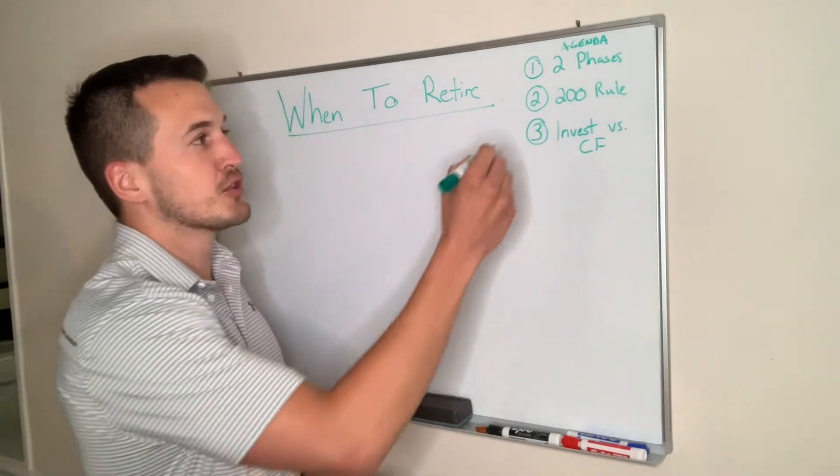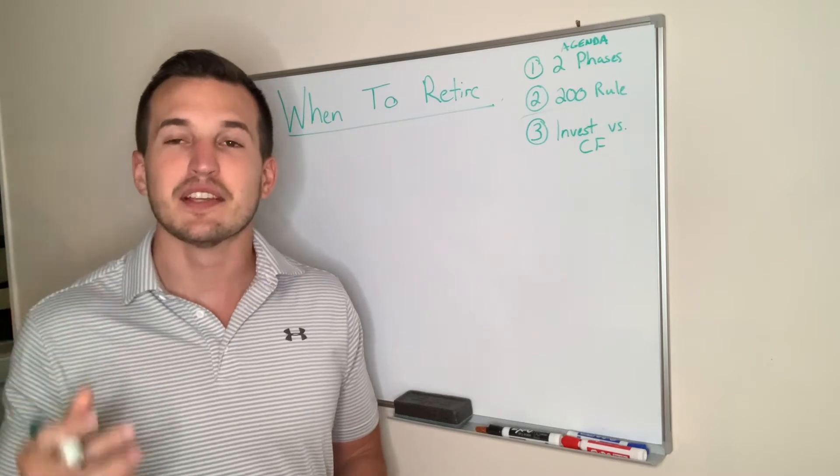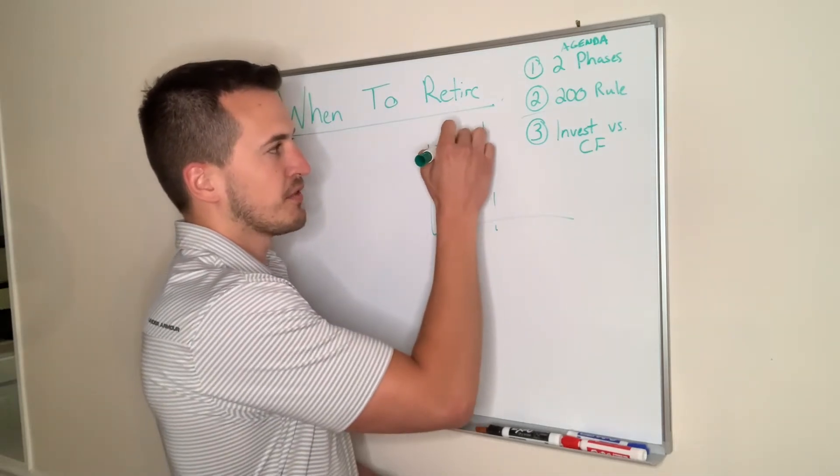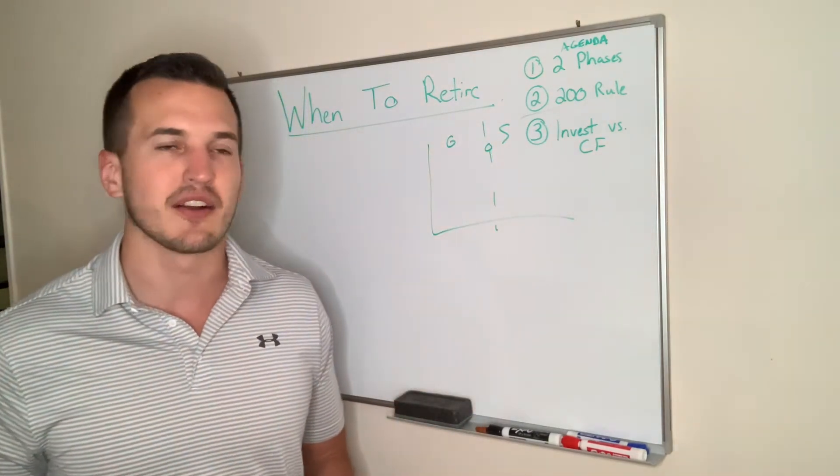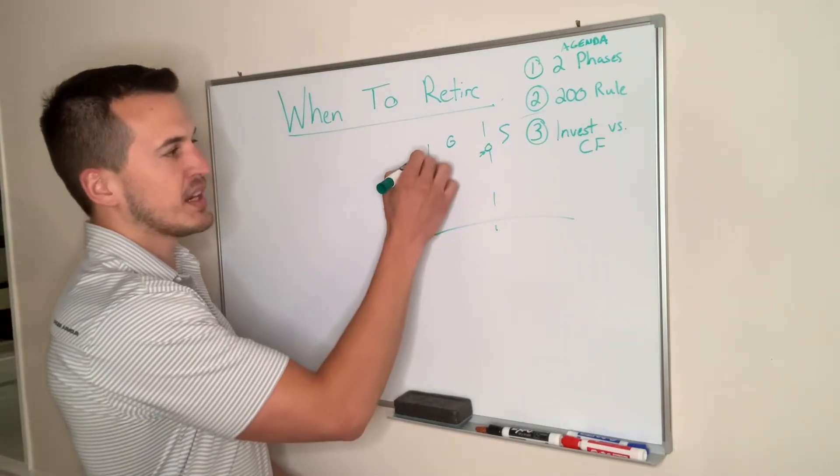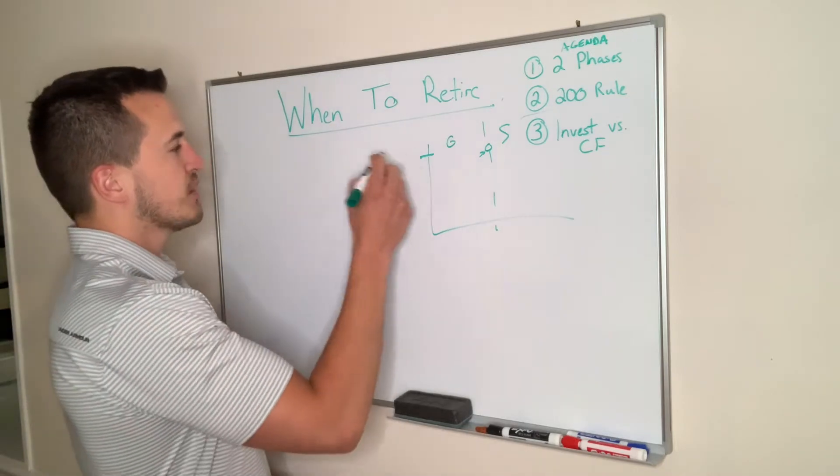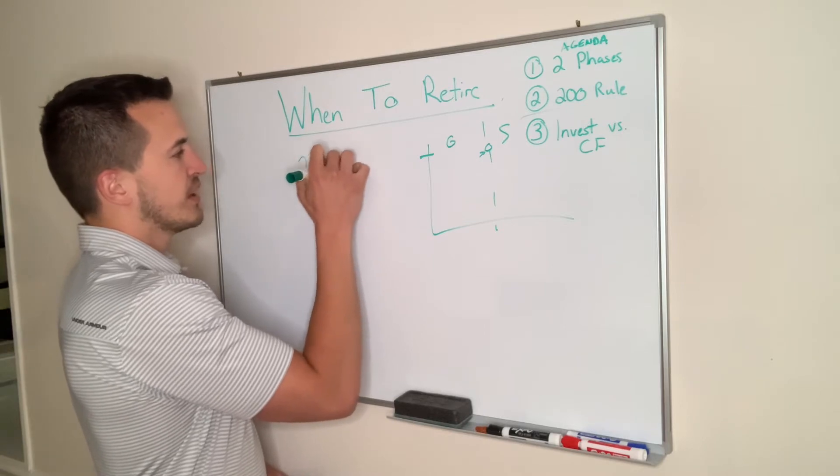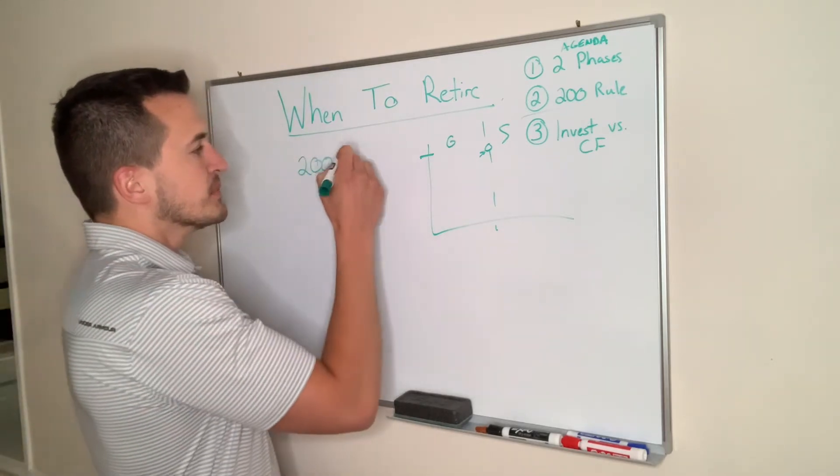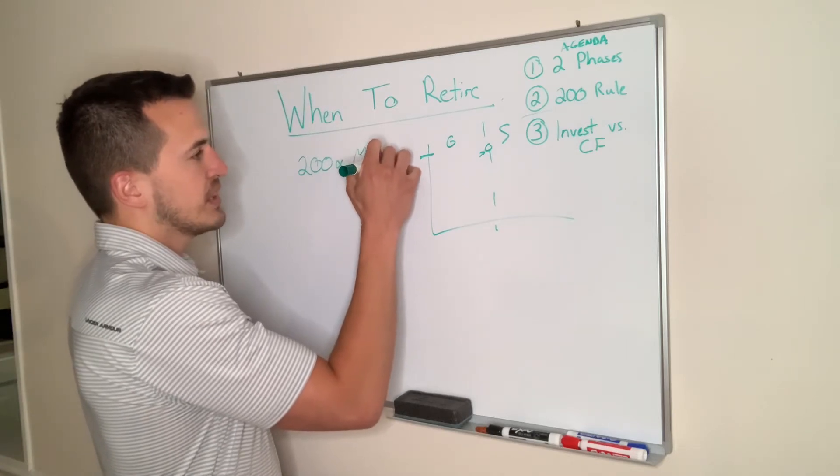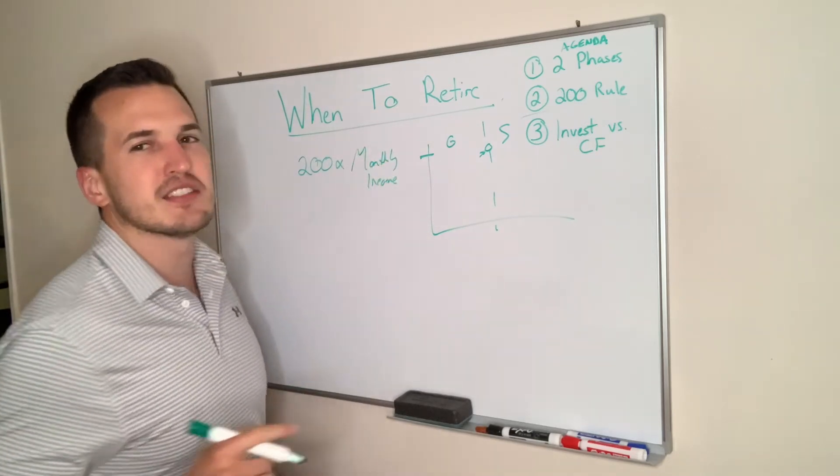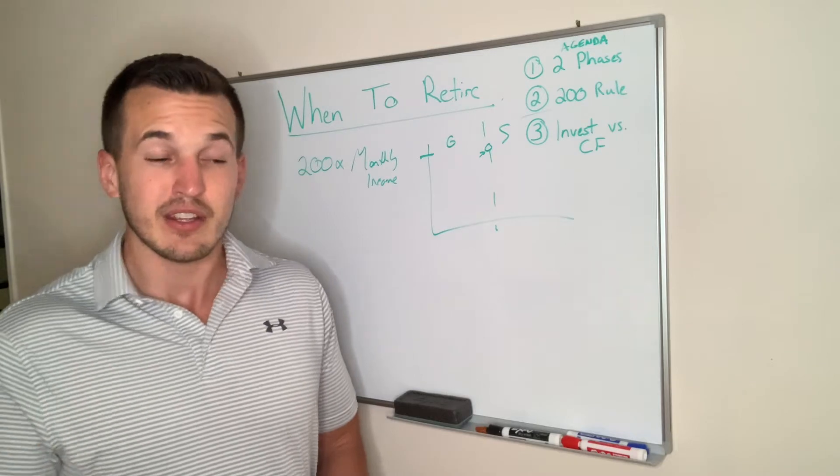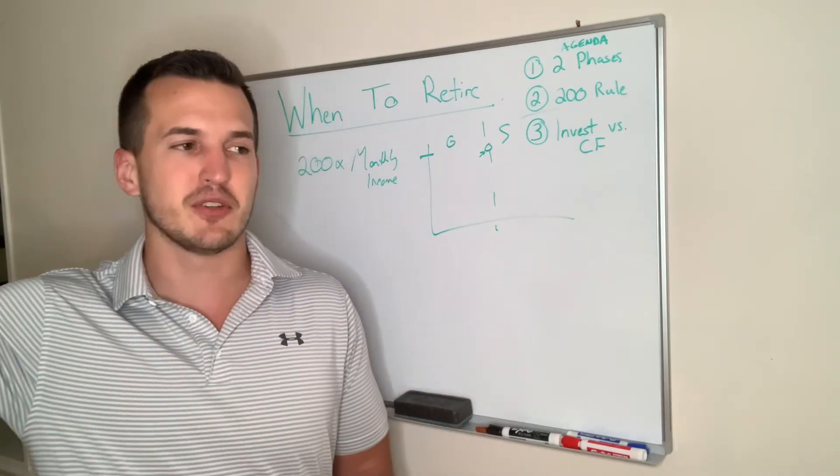Step number two is the rule of 200. This is a great rule of thumb to help you identify when we talked about that graph, the growth transition from growth to sustain. How do you get there? To calculate what that point is from a net worth perspective, using the rule of 200 is very simple. All it means is that you take 200 times the monthly income that you would need. This is a fairly easy number to calculate because you know what kind of lifestyle you want to live. Do you want to be more lavish or do you want to move off the grid?